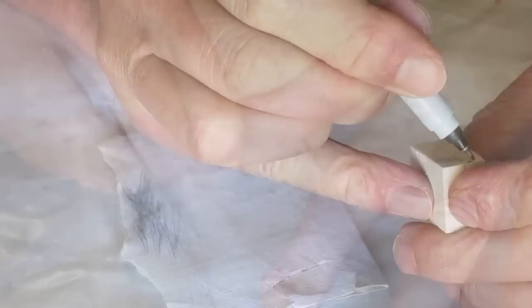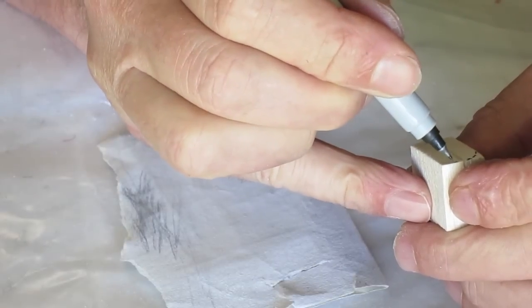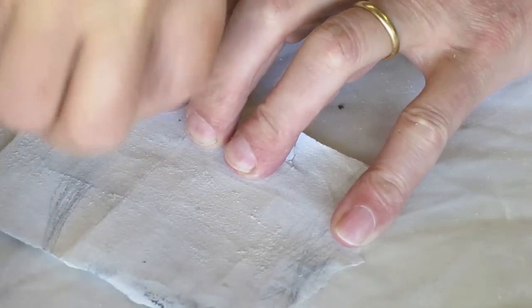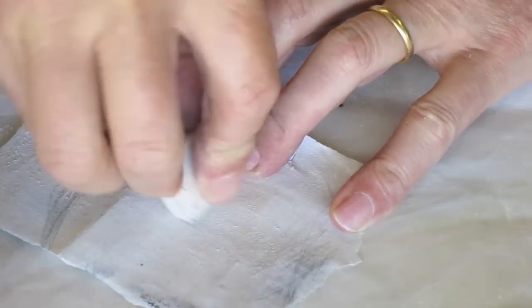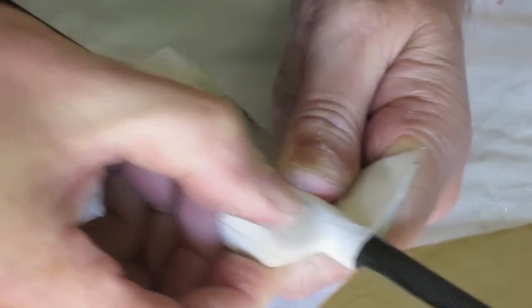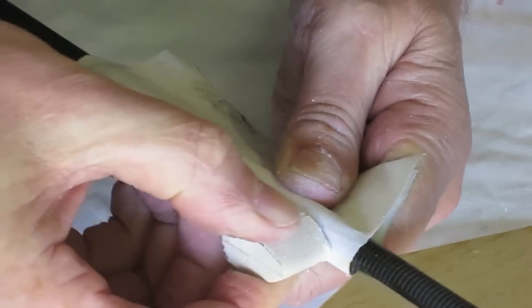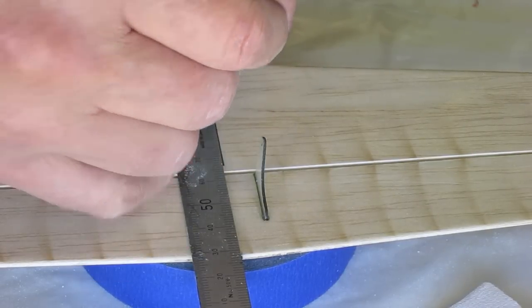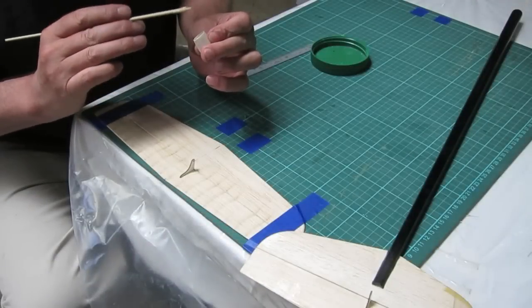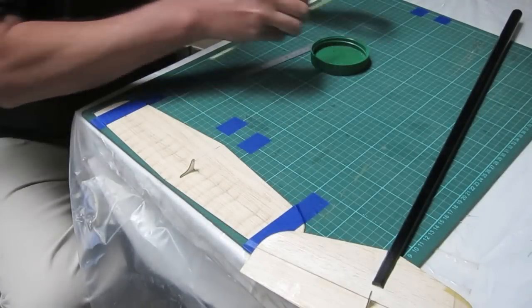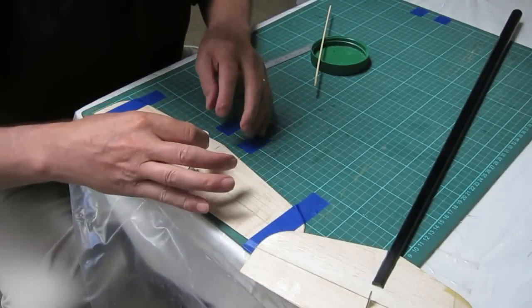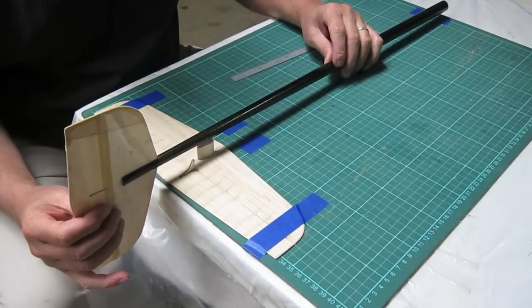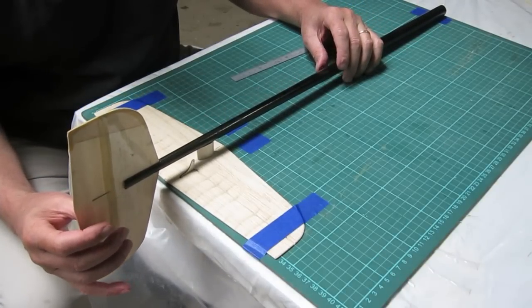The first thing that you need to do is make the support for the horizontal stabiliser from two blocks of 5mm balsa. You can shape that into a nice aerofoil shape to reduce drag, and this is forming the concave bottom surface so that it glues onto the boom nicely. Marking the centre line of the horizontal stabiliser and gluing that balsa support on. I've taped it down onto a cutting mat so I can use the horizontal and vertical lines to line everything up.